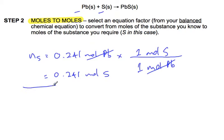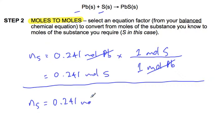Since it's a one-to-one ratio, you don't even need to calculate that separately. You can simply write out the number of moles of sulfur and indicate it's a one-to-one ratio in brackets. This applies to any one-to-one ratio — for example, two-to-two or three-to-three are also one-to-one.